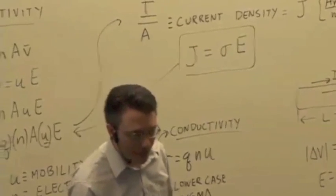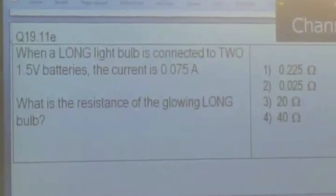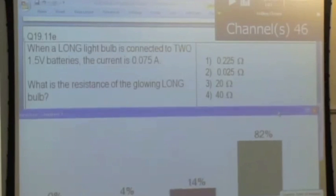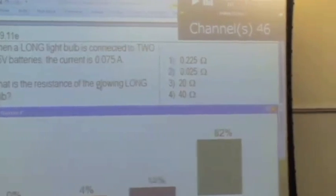That's resistance. Let's try a quick calculation here. A long light bulb is connected to two 1.5 volt batteries and we measured the current to be 0.075 amps. What's the resistance of the long bulb? It should be pretty straightforward. All right. Clearly, it's got to be 40 ohms, is that right? Oh, yeah, because it's two batteries, that's right. So the total potential difference is 3 volts. So 3 volts divided by 0.075 amps is going to give you 40 ohms. So that's resistance.